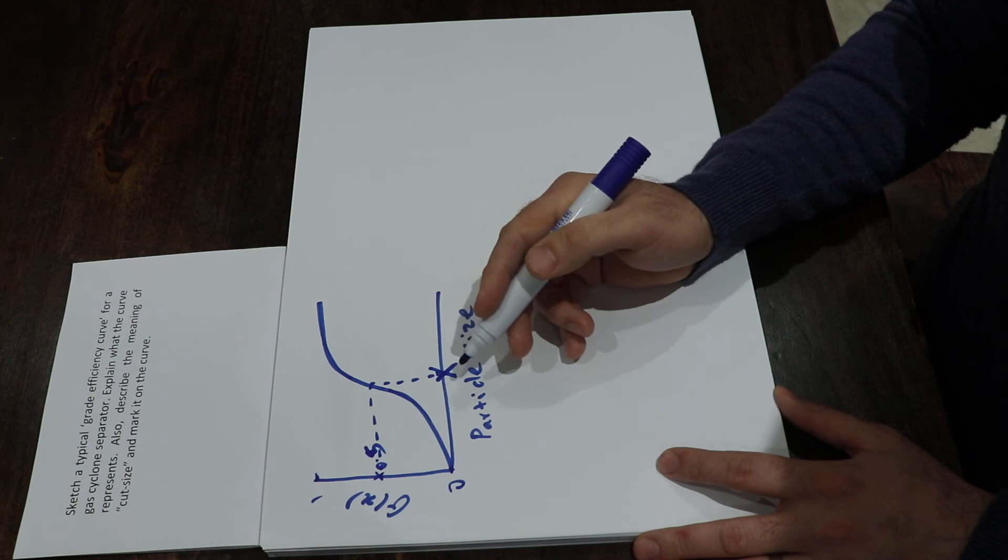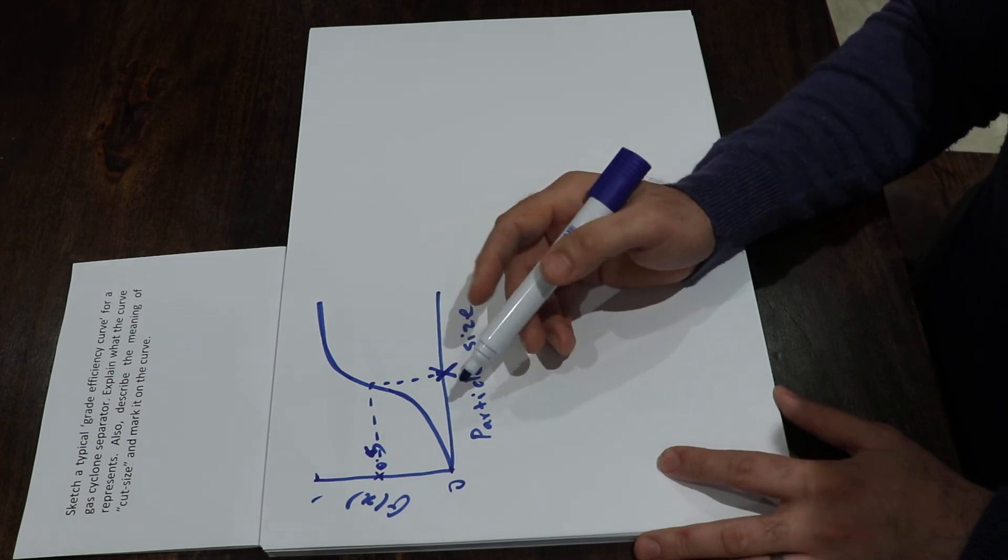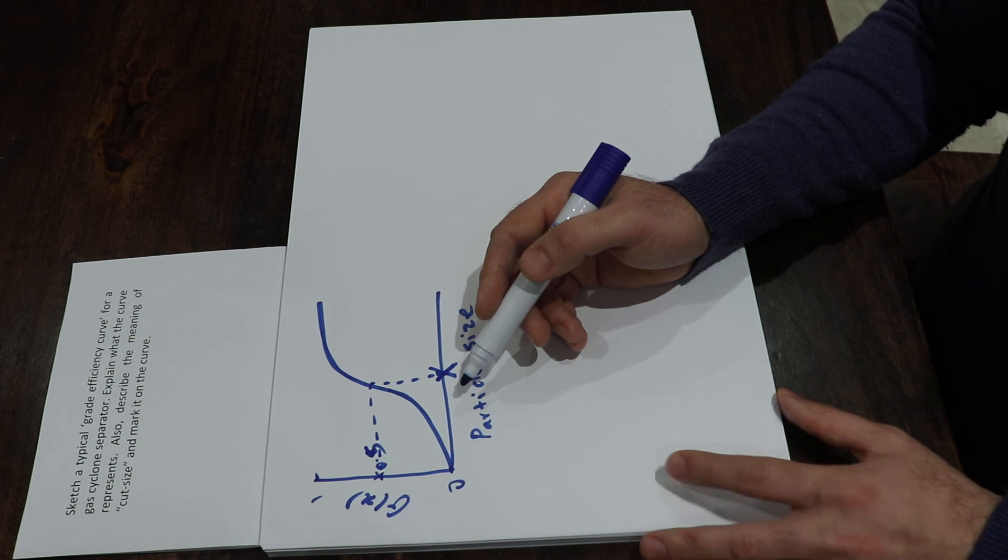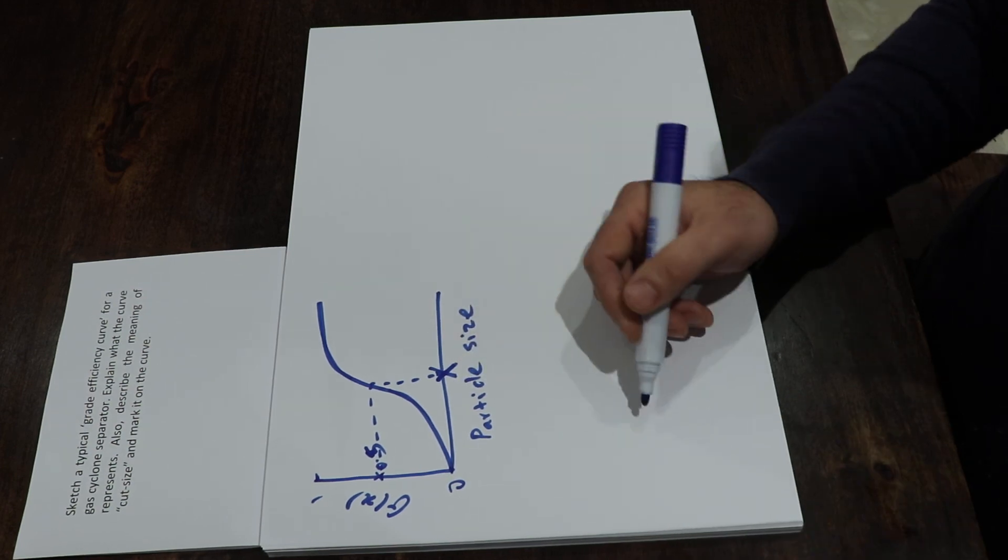cut size, or sometimes equiprobable size, because this is the size of the particle which has a 50% probability of appearing in the coarse product. And that's the answer to this question.